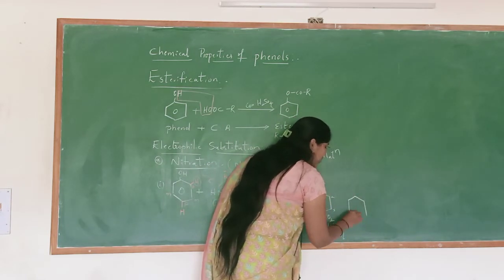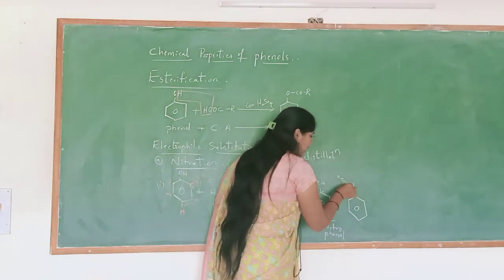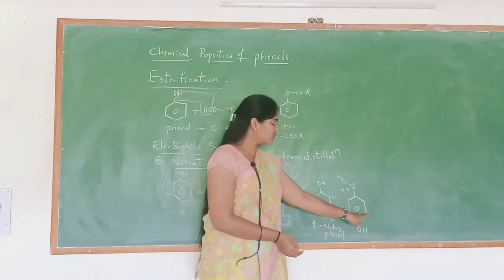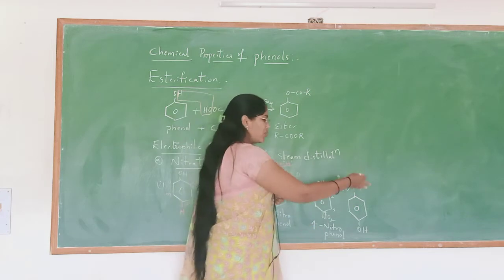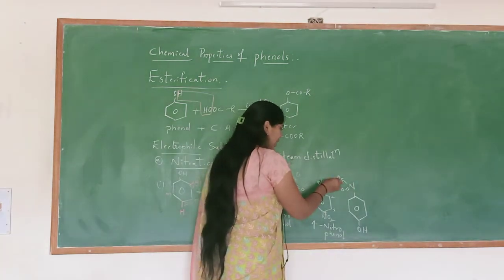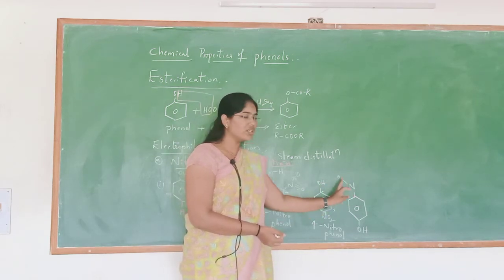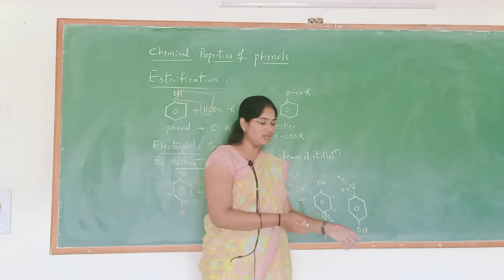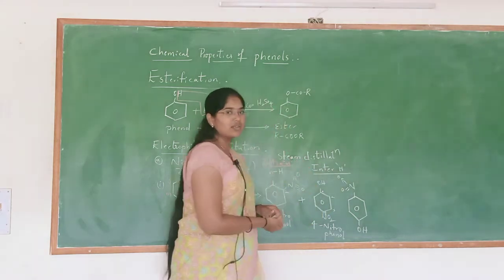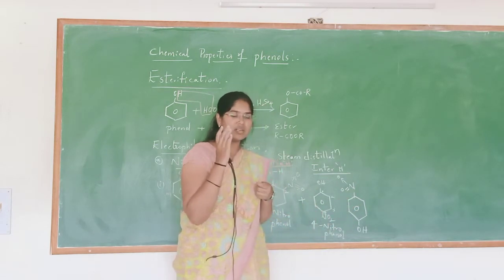That means whenever another molecule of 4-nitrophenol comes closer to the first molecule, the oxygen of one molecule is attracting the hydrogen of the second molecule. Again we have some attractive forces, and these attractive forces are between two different molecules. So we can say it contains intermolecular hydrogen bonding.